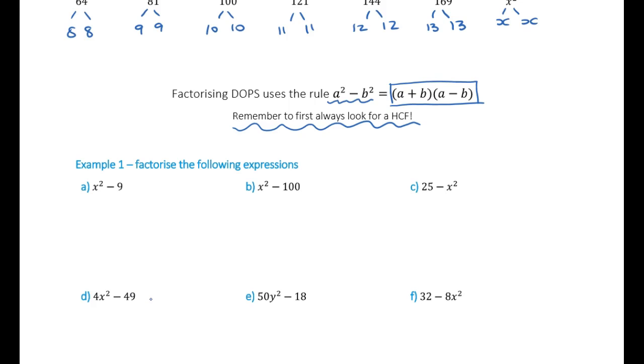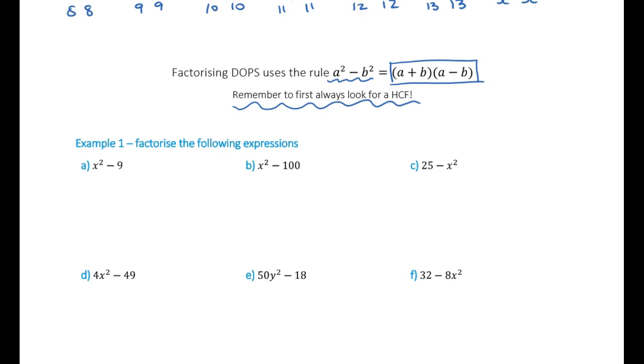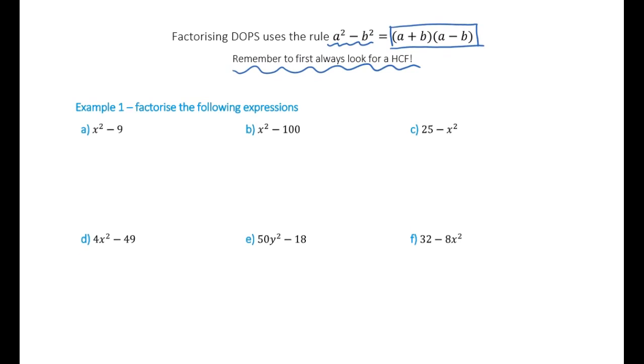So with example one here, we've got x squared minus nine. Now, does this look like two things squared? Well, it might not at the moment, but this one definitely looks squared. X squared we know is x times x. So we need to think nine, is that something squared? Well, yeah, we saw before, that's three times three. So in order to factorize this, to put it back into brackets, we're going to put a double set of brackets in.